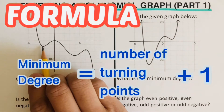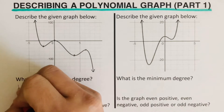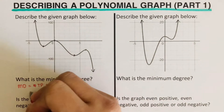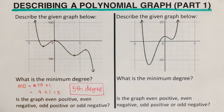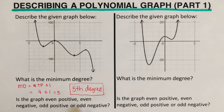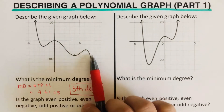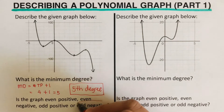In this problem, we have one, two, three, and four turning points. So the minimum degree is four plus one, which gives us a fifth degree polynomial. Since the left side is going up and the right side is going down, this is classified as odd negative.